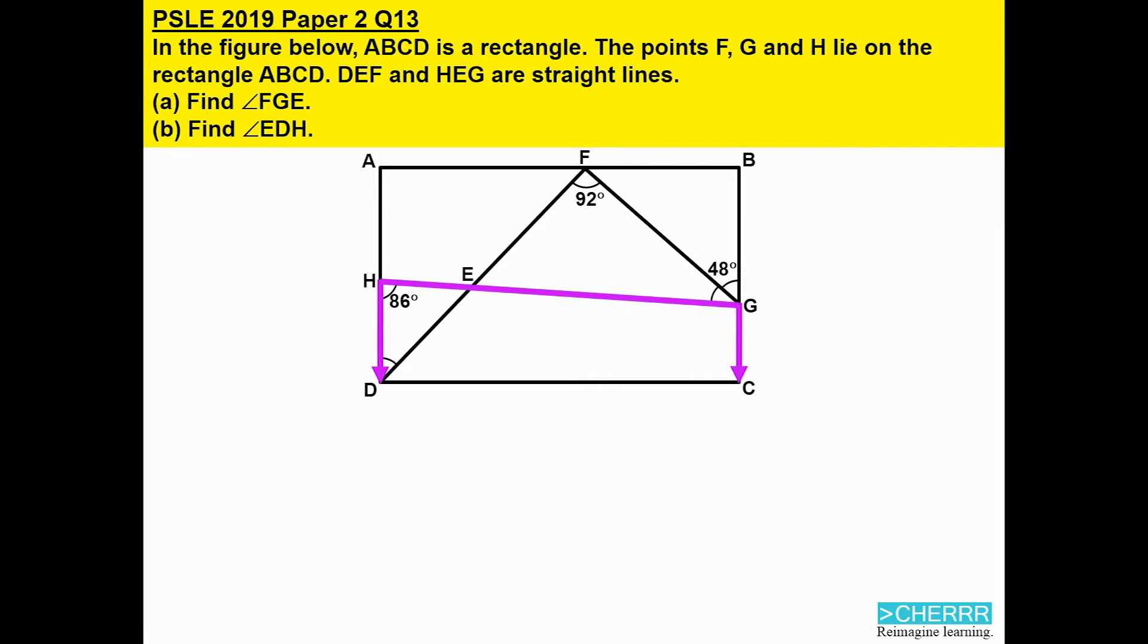First, let's identify the pair of parallel lines. AD and BC are parallel lines on the rectangle. With the line GH cutting across, we now have angles between parallel lines in which the two angles must add up to 180 degrees.